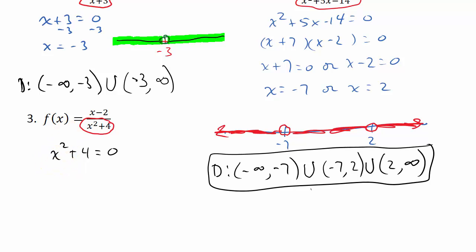Because whatever number you plug in for x, when you square it, we would need negative 4 after we square it. Well, there's nothing you can square to get negative 4, because anytime you square a number, it's positive.